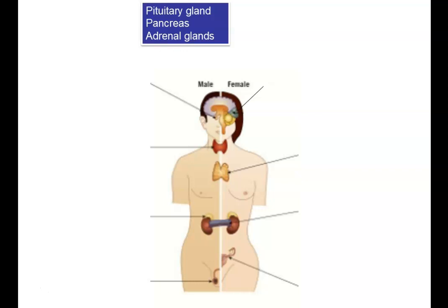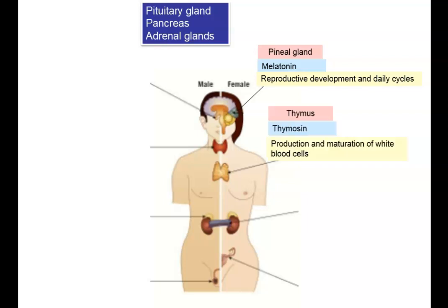The first gland is the pineal gland, which is in your brain and produces the hormone melatonin. Melatonin is used as part of reproductive development and also in your daily cycles — when you get tired and sleepy or when you're alert first thing in the morning. This is the hormone that causes trouble when we go abroad, enter a different time zone, and suffer from jet lag. The second endocrine gland is the thymus, which produces thymosin, involved in the production and maturation of white blood cells — T cells — because they pass through the thymus.